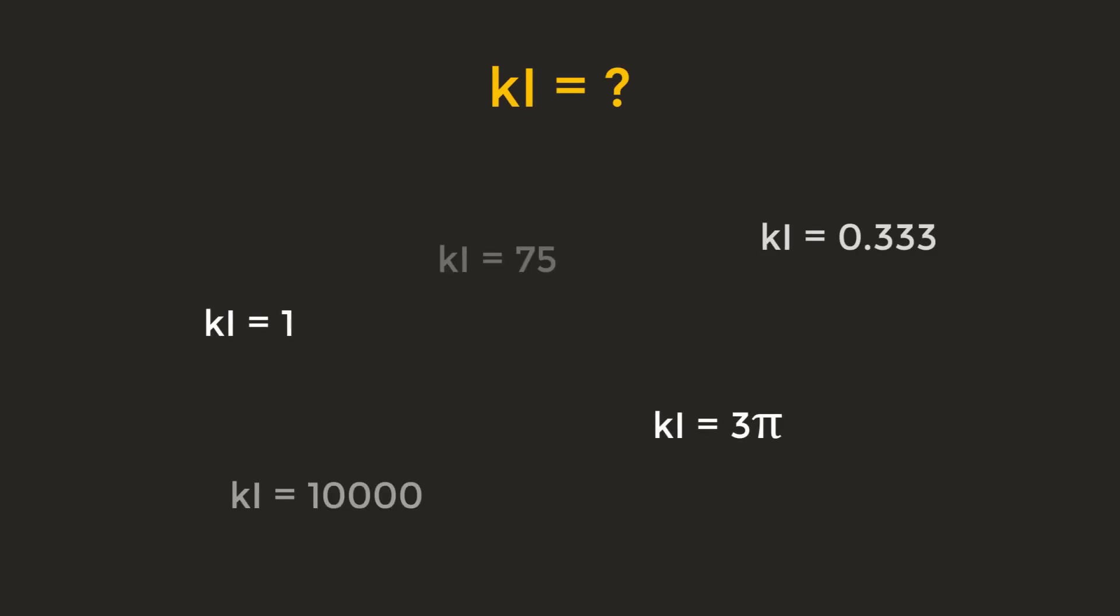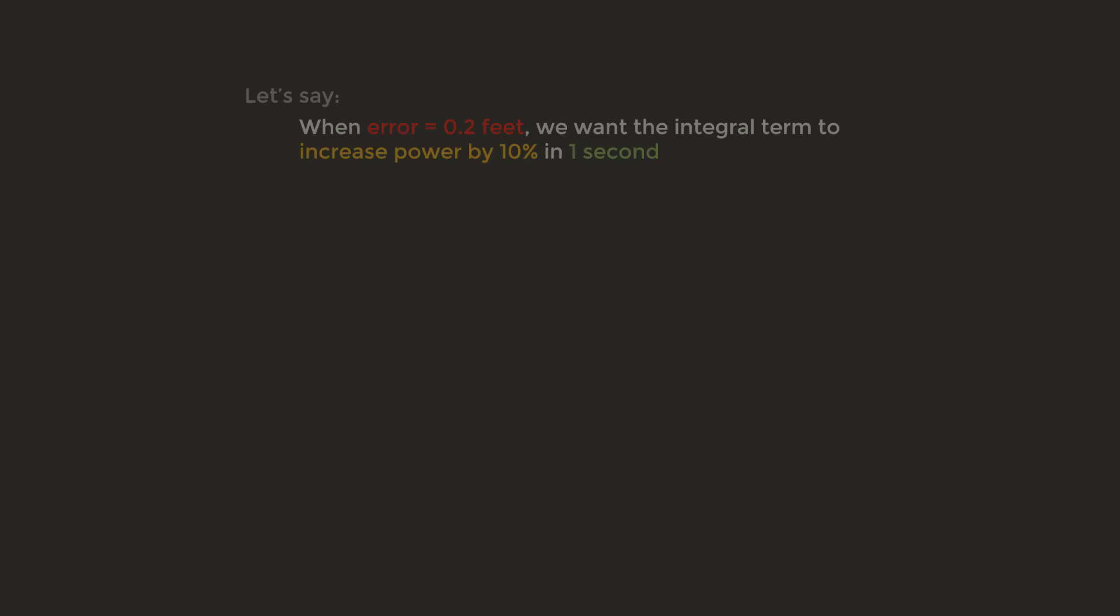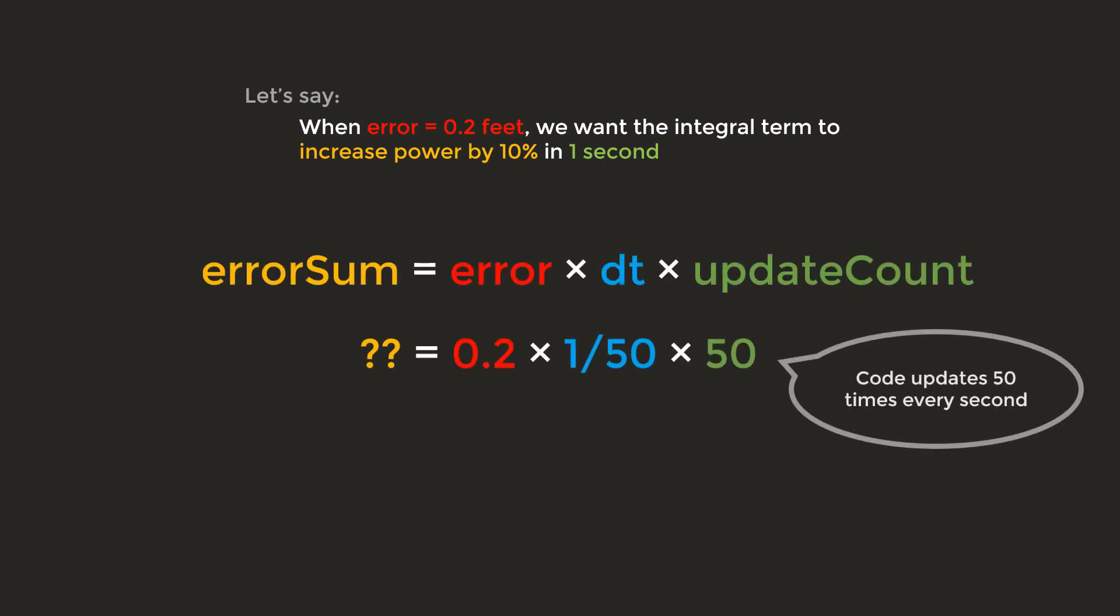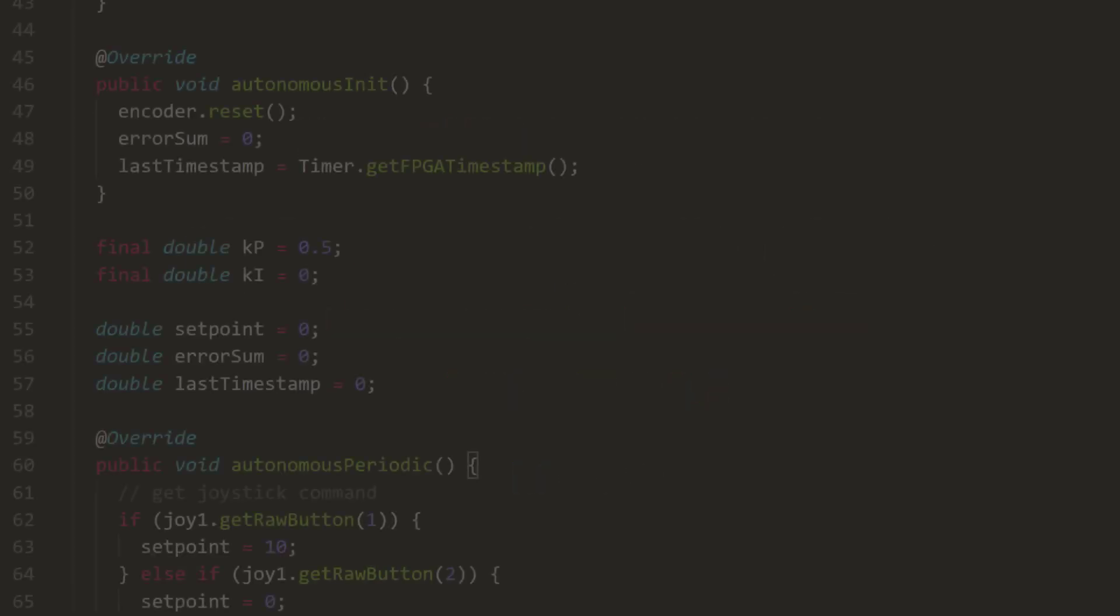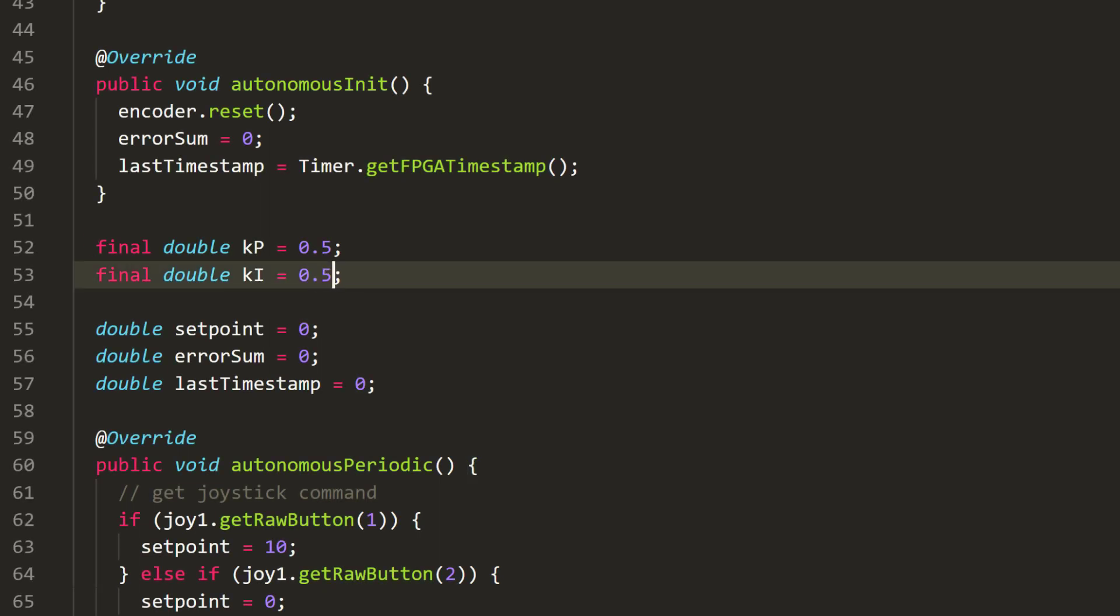For the initial guess of KI, we could very well give any value. But here I'll show how to find a reasonable guess. From our previous test, where KP equals 0.5, we had a tiny error of 0.2 feet. Let's say we want the integral term to accumulate 10% power in one second from that 0.2 feet of error. Because we know the code runs 50 times every second, after one second, error sum will be around 0.2. If we want an error sum of 0.2 to have 10% power, we can thus find KI to be 0.5. Now let's enter 0.5 into the code and see how it works on the robot.